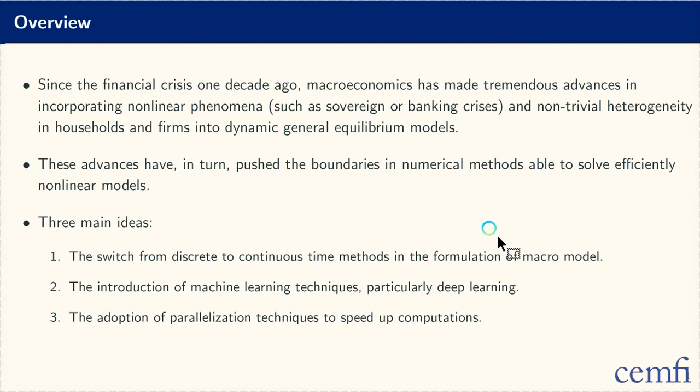Since the financial crisis, already over one decade ago, macroeconomics has made tremendous advances in incorporating non-linear phenomena. Think for instance about all the models we now have to deal with sovereign or banking crises, and also for introducing non-trivial heterogeneity in households and firms into dynamic general equilibrium models. We have now many models to deal with heterogeneous agents in New Keynesian models — the so-called HANK class of models.